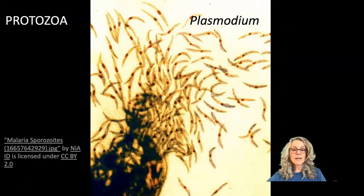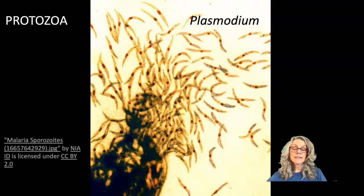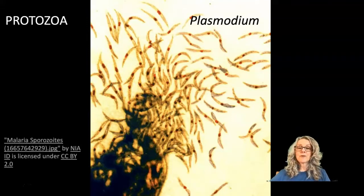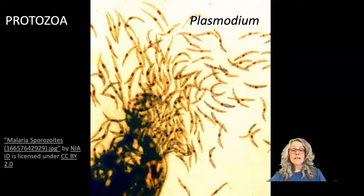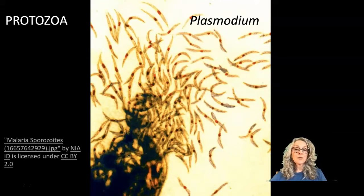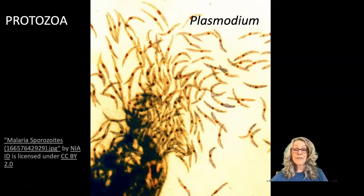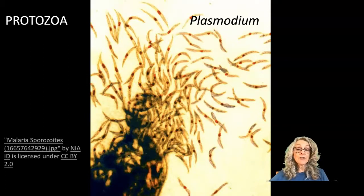Then we have the protozoa. Protozoa are single-celled eukaryotes, such as this plasmodium. A eukaryote is an organism that has membrane-bound organelles. Humans have eukaryotic cells, but the protozoa are the single-celled eukaryotes. Plasmodium is known to cause the disease malaria, which the World Health Organization in 2018 estimated that 405,000 people worldwide died of malaria, and two-thirds of those were children under the age of five.